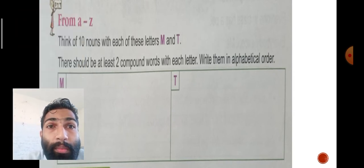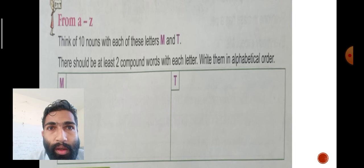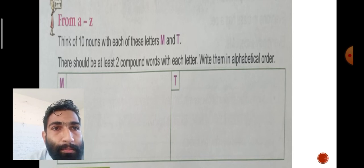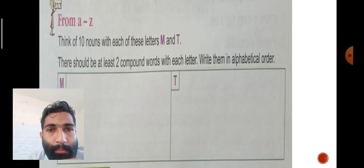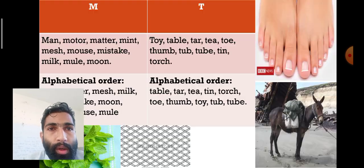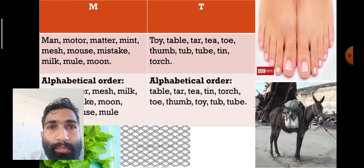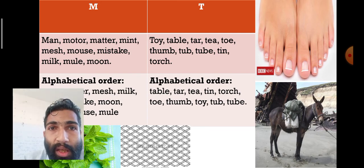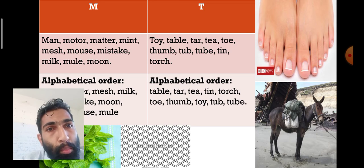Next, from A to Z—think of ten nouns with each of these letters, M and T. There should be at least two compound words with each letter. Write them in alphabetical order. We have lots of words with M and T. First M: man, motor, matter, mint, mesh, mouse, mistake, milk, mule, moon.